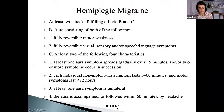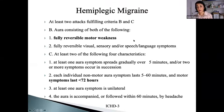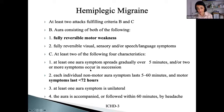Hemiplegic migraine differs in that you can get fully reversible motor symptoms, but they last much longer — up to 72 hours. You also get visual, sensory, and speech and language symptoms with successive evolution. The non-hemiplegic symptoms last up to 60 minutes, but the motor aura can last days. The aura is typically accompanied by a headache that normally occurs within 60 minutes, but can occur at any time.